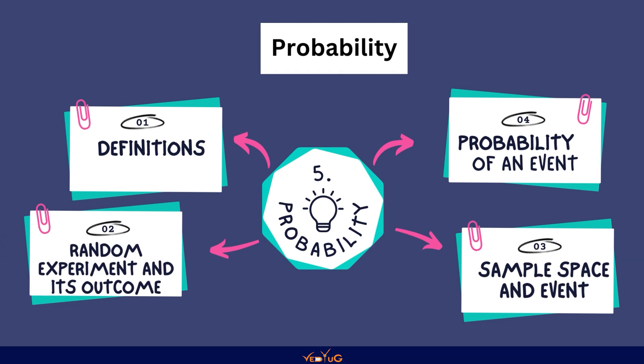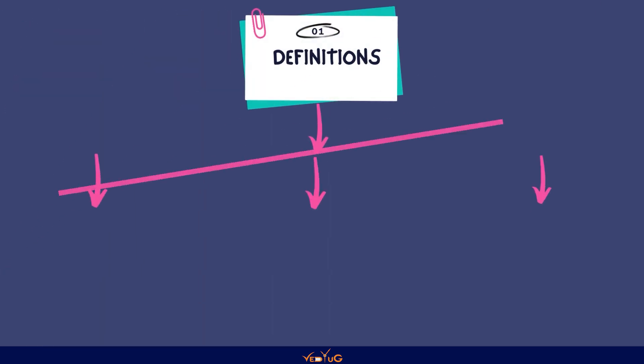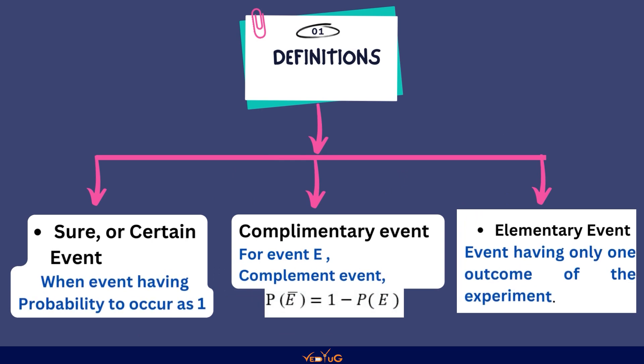हम यहाँ पर उसके काफी सारे concepts पढ़ेंगी जैसे की definition, random experiment and its outcome, probability of event and sample space and event. So let's get started, पहले आते हैं definitions के तरफ. Definitions में हम जानते है sure और certain event के बारे में. When event having probability to occur is one is known as sure और certain event.